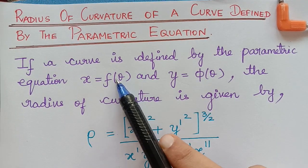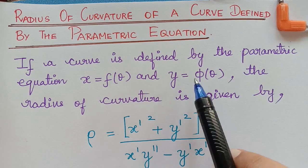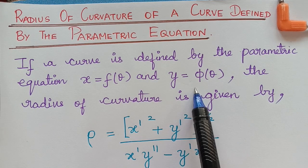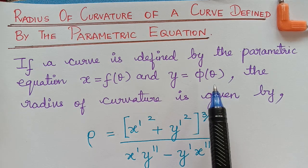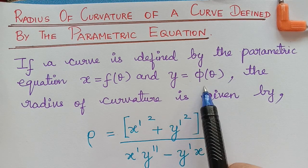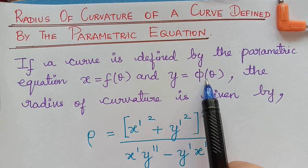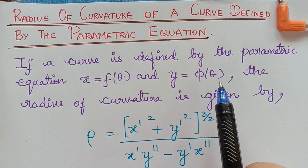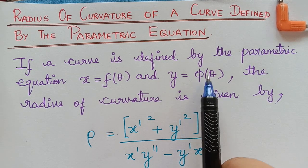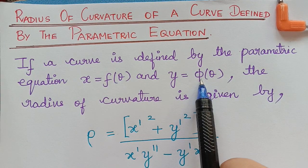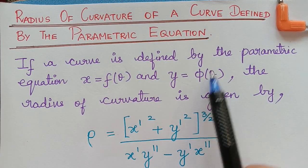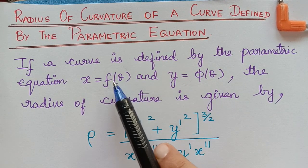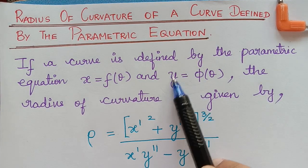We are going to find the radius of curvature when the curve is defined by the parametric equation. Importantly, students tend to confuse the parametric equation with the polar coordinate equation. Polar coordinates involve a single equation or two equations in terms of r and theta, whereas in parametric equations, x is given in terms of a parameter theta and y is also given in terms of theta — or any parameter t.